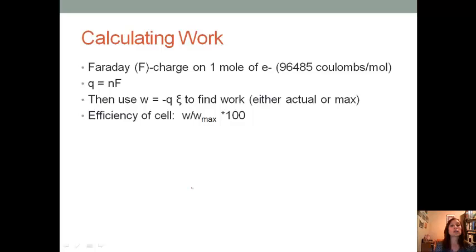Let's talk about how to calculate work. A Faraday, or capital F, is the charge on one mole of electrons, and this is a constant of 96,485 coulombs per mole of electrons. We can use Q, which is our charge, equal to the number of moles times Faraday's constant. Then we can use our work equation, so work equals the negative charge times the potential. We can use this to find work, either actual or maximum, depending on what cell potential we use. We can then find the efficiency of the cell by taking the actual work divided by the maximum work times 100.